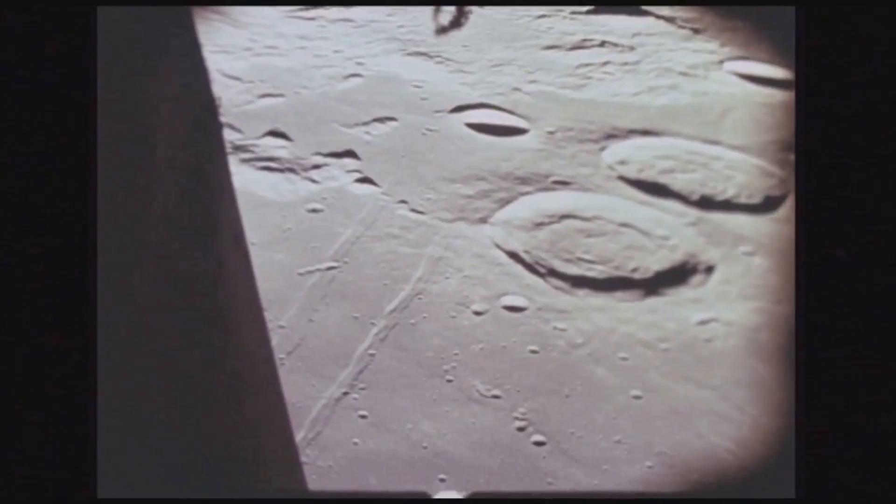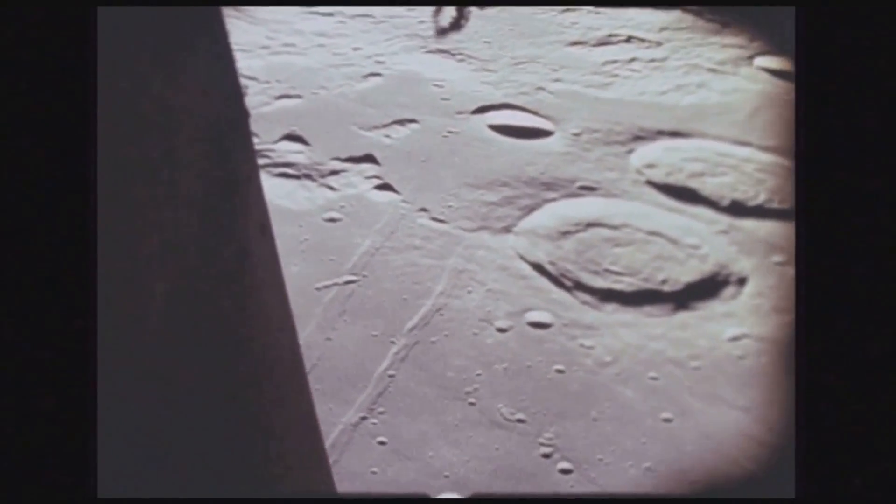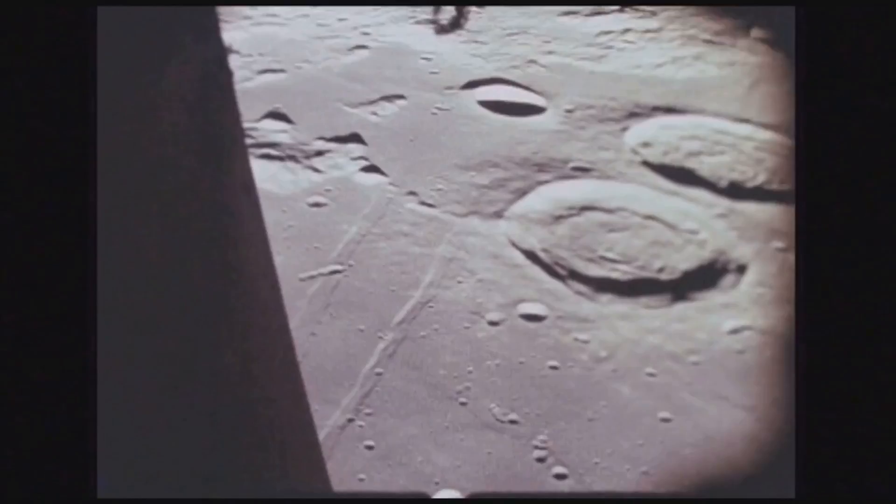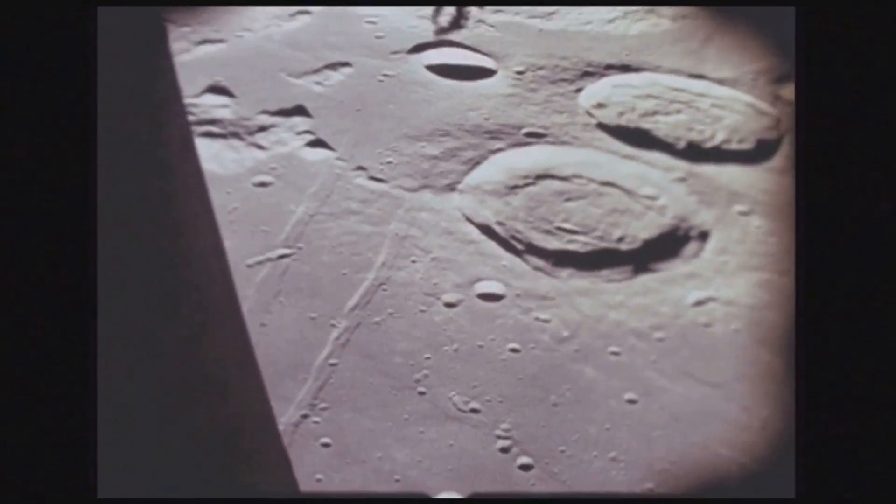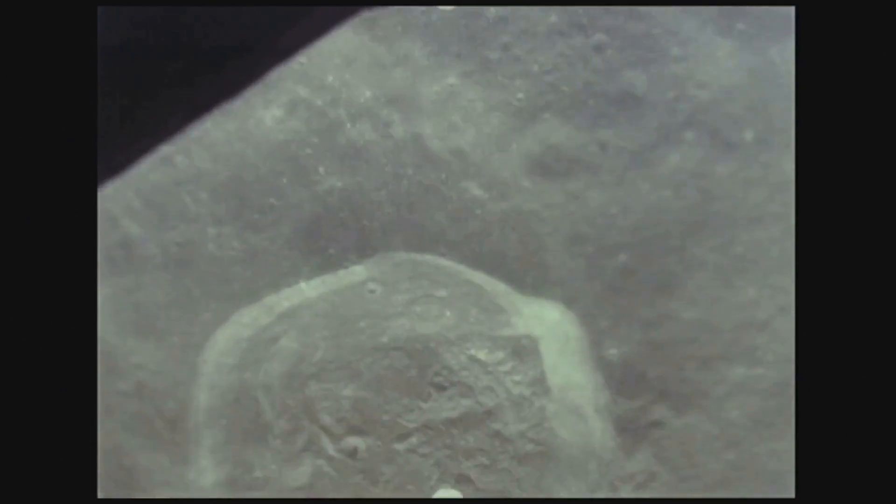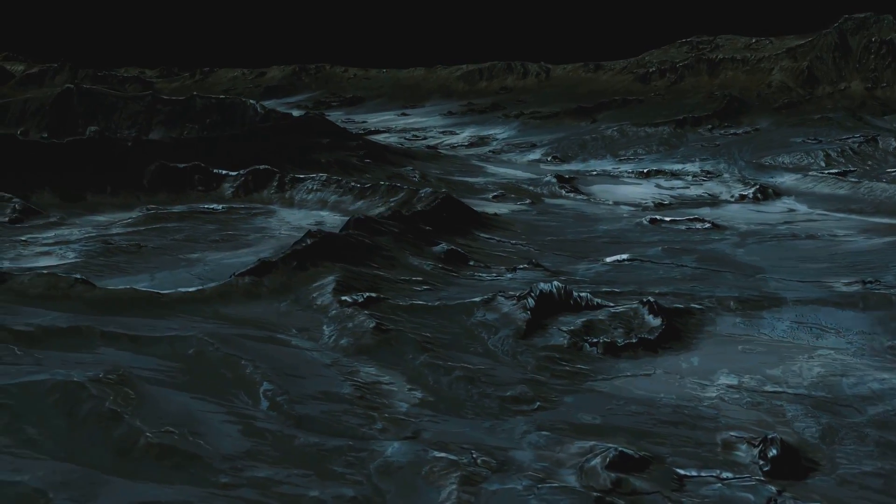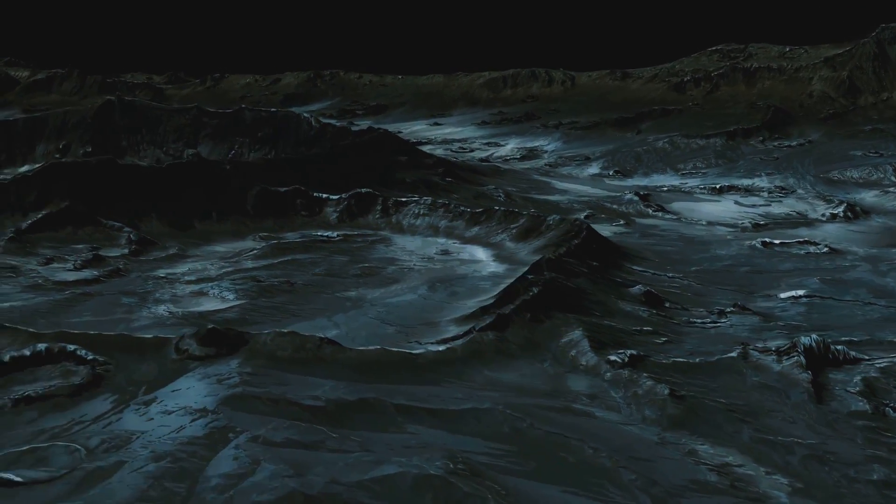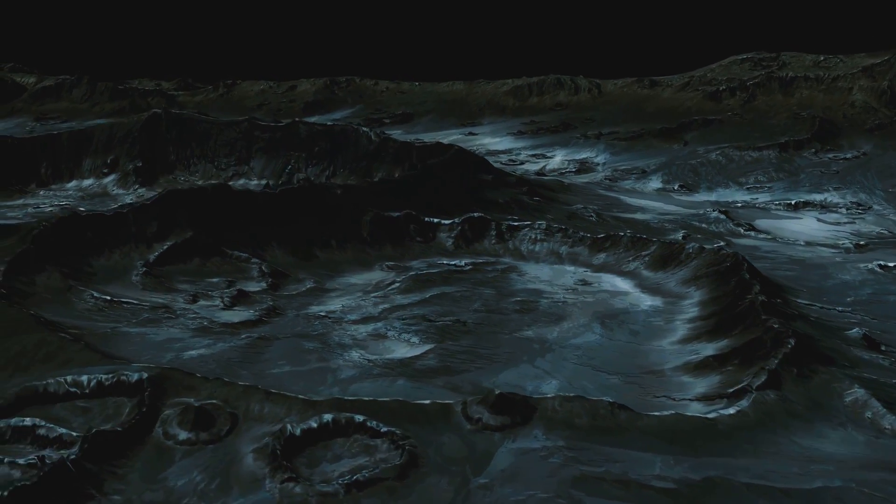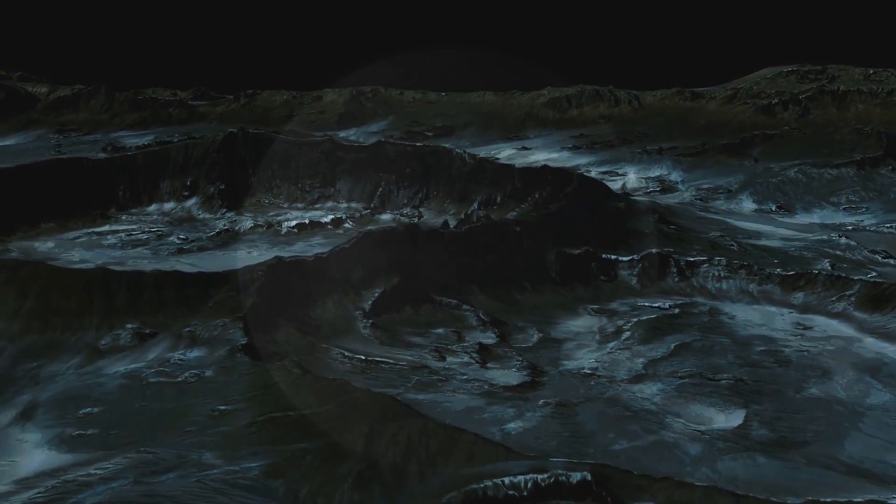They can estimate their size, speed, and direction of impact. They can also learn about the internal structure of Mercury itself, as impacts often expose layers of rock that would otherwise remain hidden. The heavily cratered surface of Mercury tells a story of its ancient past, a silent witness to the solar system's turbulent history.